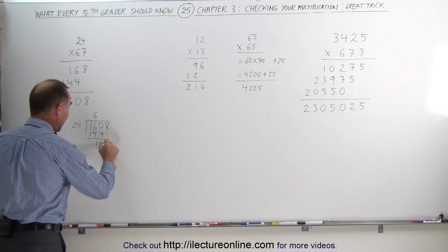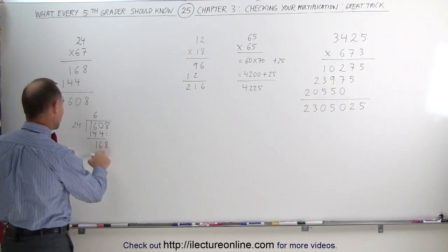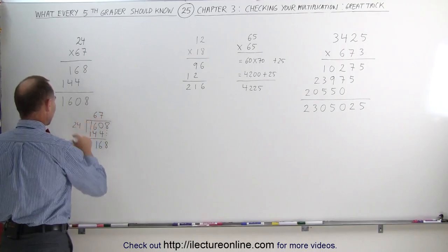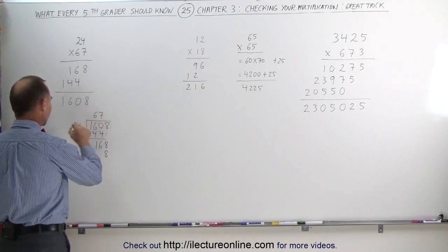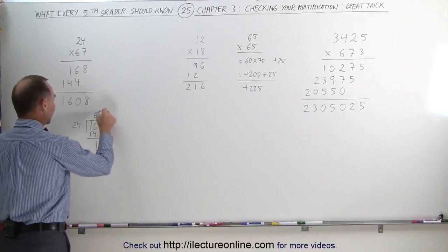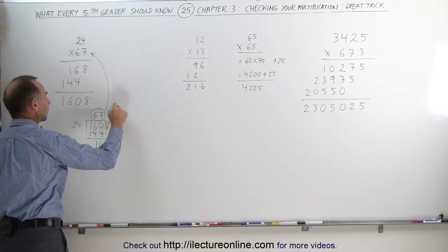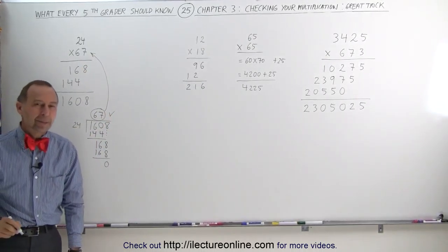Then we would drop the number 8. Again, 24 goes into 168, well that looks like it may be 7 times. 7 times 4 is 28, write down the 8, remember 2. 7 times 2 is 14, plus 2 is 16, and sure enough, 67 is the result, which matches the number over here, and you say okay, I did the multiplication correctly.